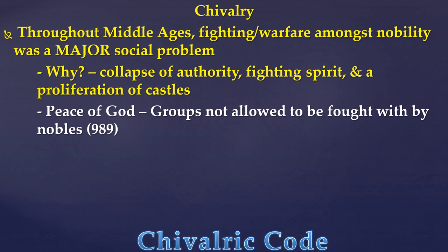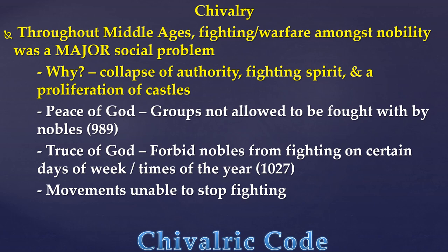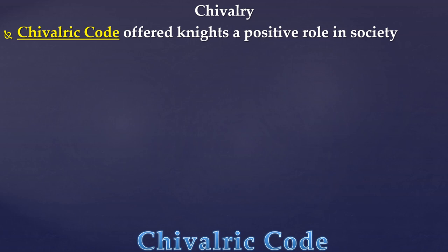The clergy tried to address this. The Peace of God movement, introduced by popes and cardinals, decreed by Catholic law that certain groups — like peasants — could not be fought by nobles; you could only fight other nobles. The Truce of God movement prohibited nobles from fighting on certain days of the week, like Sunday, and during certain times of year like Easter, Advent, and Lent — leaving only about 60 to 70 days where fighting was technically allowed. If you're guessing whether this worked — no, absolutely not. The movement was unable to stop the fighting, and it became a giant mess. So the knights tried to fix this themselves.